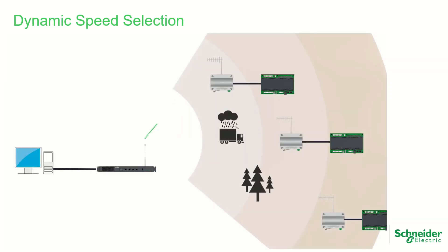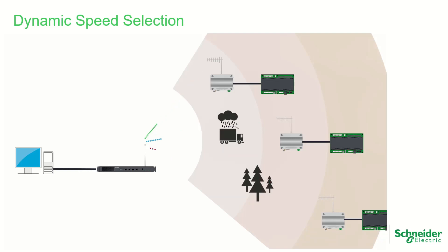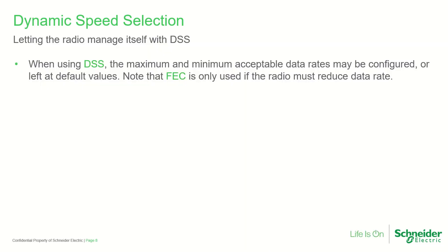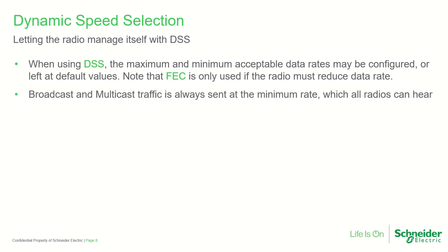DSS allows remotes with a strong link to operate at high speed, remotes with some path challenges to reduce their speed slightly, and remotes that are far from the base, in heavily obstructed locations, or experiencing significant interference to operate at slower speeds. This allows the average data rate to be higher than if the entire system were configured for the speed required by the most challenging link. Once DSS and related features have been set, TRIO-Q radios are able to independently manage themselves. The system designer may choose a maximum allowable data rate based on environmental and path considerations and a minimum data rate based on the needs of the SCADA system, or default values may be used. Note that broadcast and multicast messages are always sent at the lowest data rate to ensure all radios can decode them.